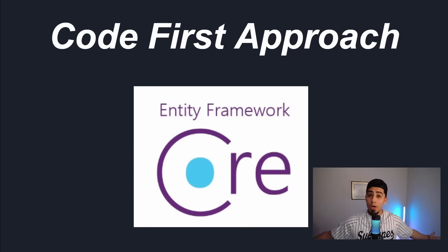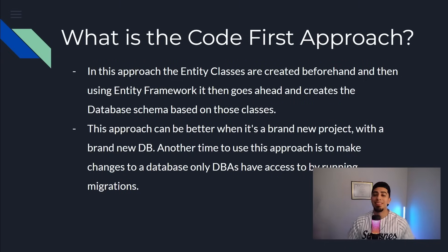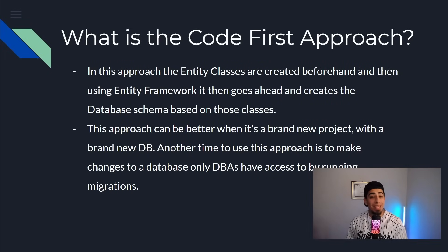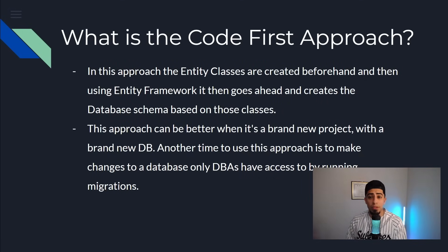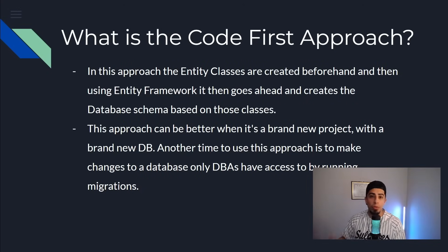So the code first approach — what is it? Well, we're using Entity Framework to make it all possible. It's the approach where you have your entity classes that you create beforehand, and then using Entity Framework, it goes ahead and creates the database schema based on those classes. This approach can be better when you have a brand new project using a brand new database that you are creating. It allows you to save a little bit of time. You don't really have to worry about the database side of things, because maybe you don't have access to the database because of roles or privileges. So using the code first approach with your models, you can just create the database schema and apply it to the database without ever actually needing to go in there and manually create anything. But now how do you actually do it in your .NET API? Let's see it.